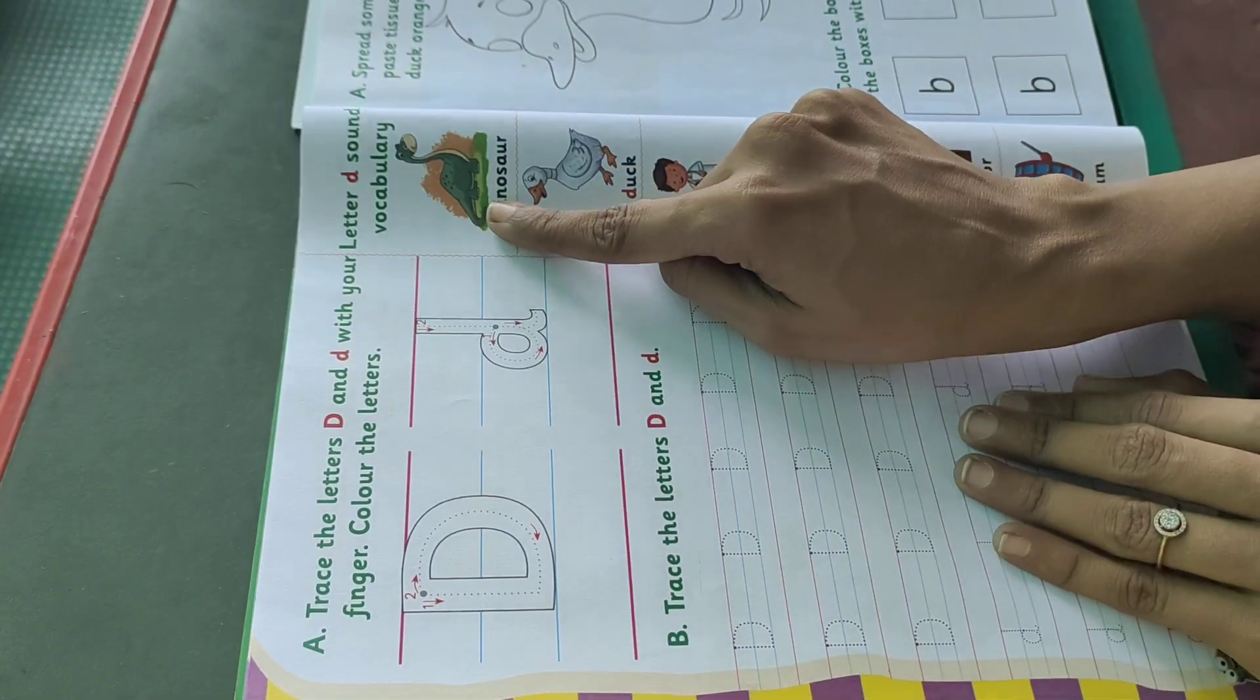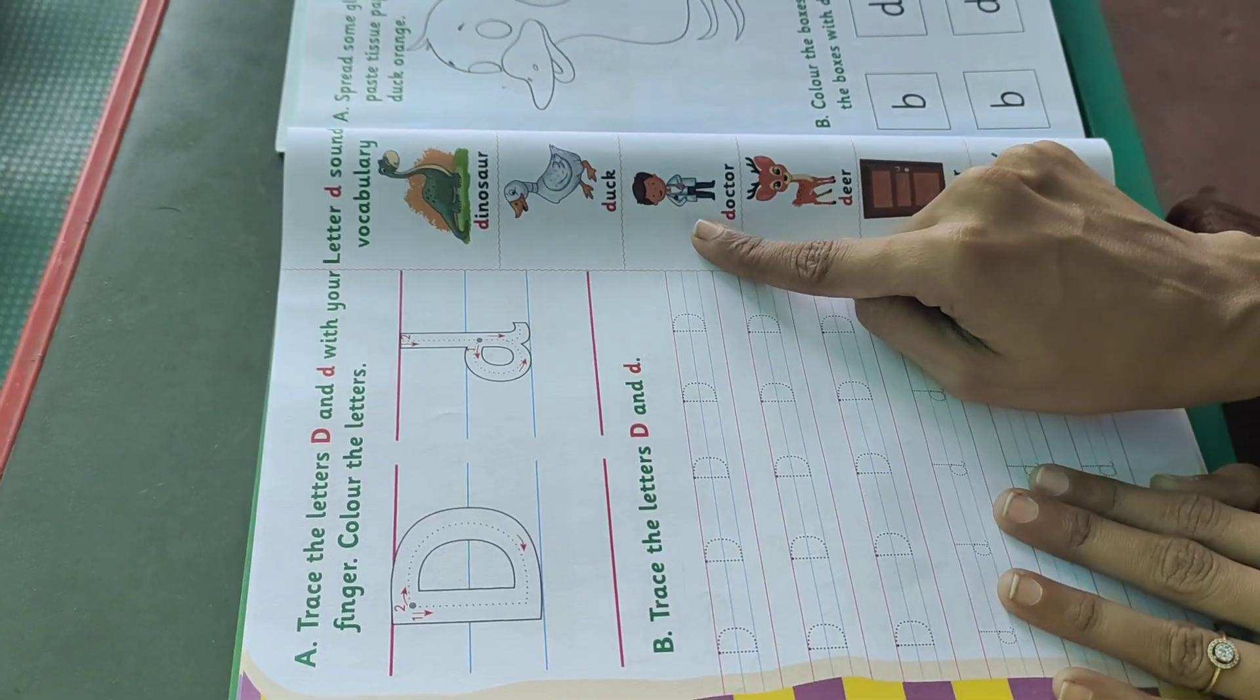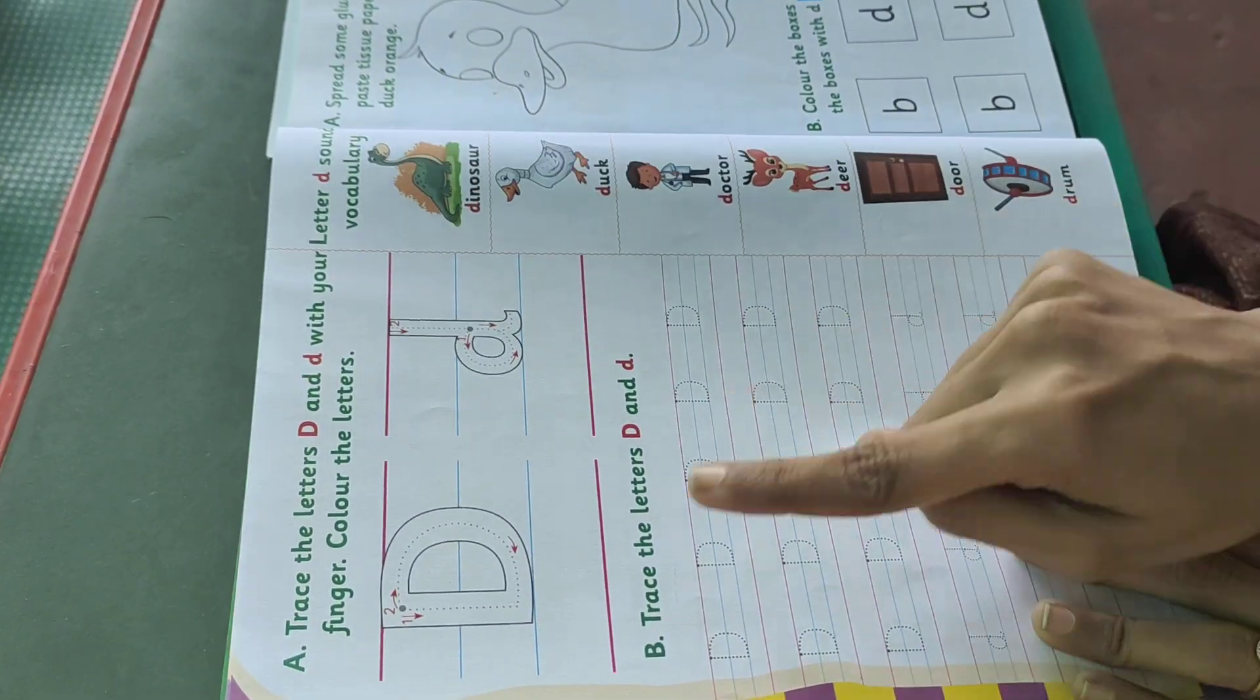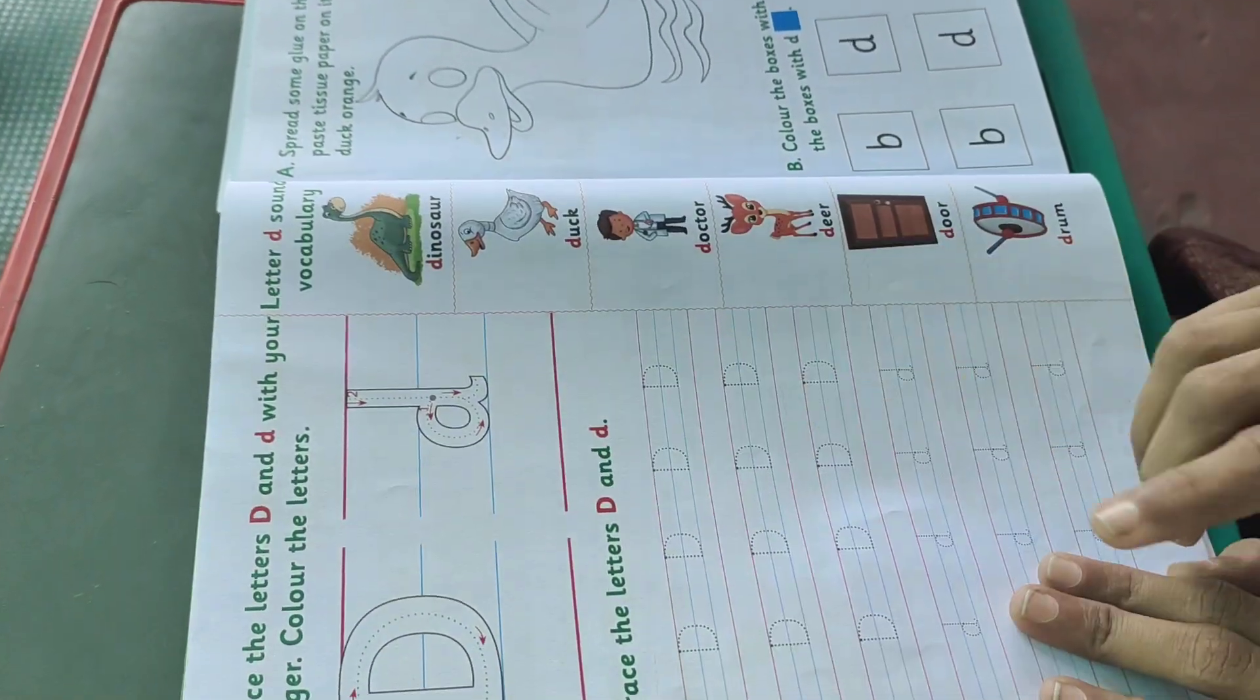D for dinosaur. D for duck. D for doctor. D for deer. D for door. D for drum. Da da. D for deer. Go.